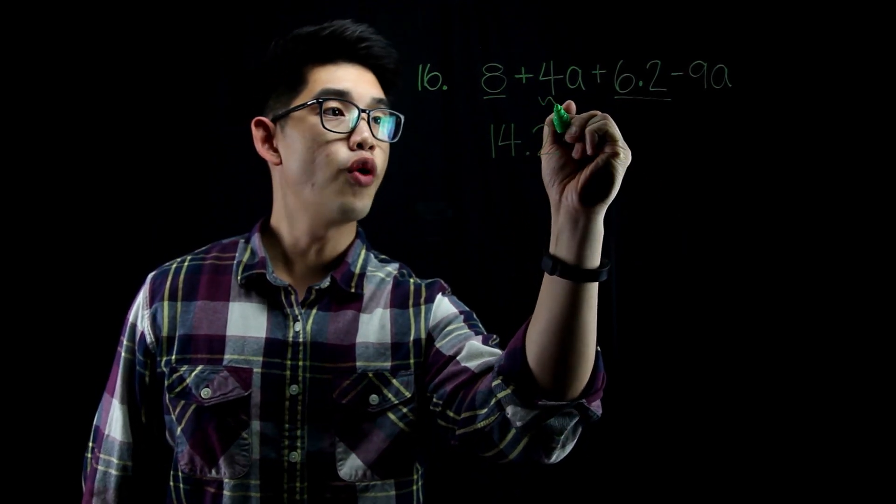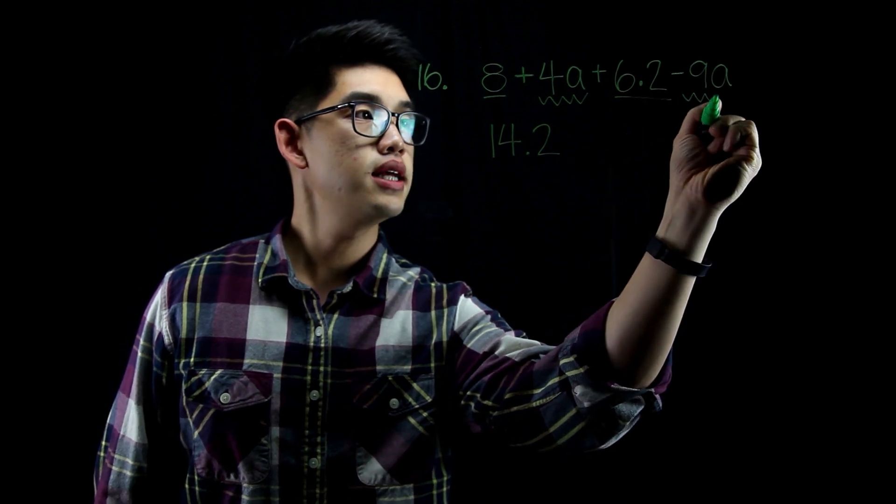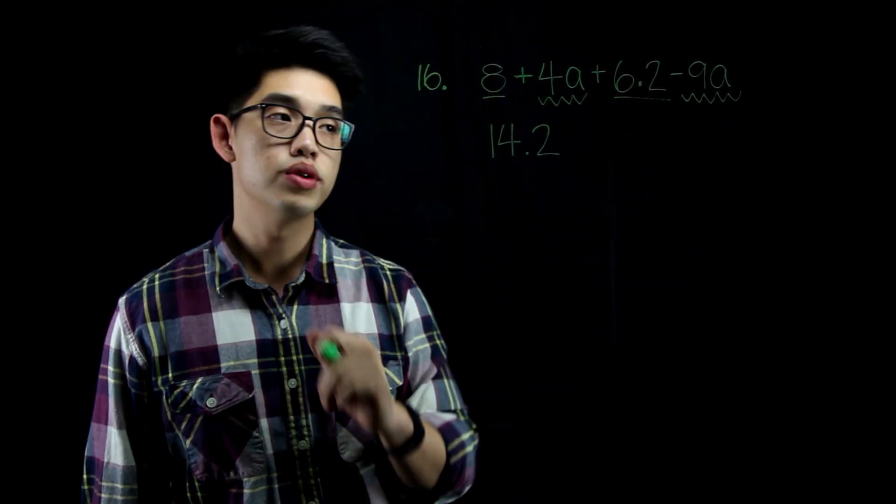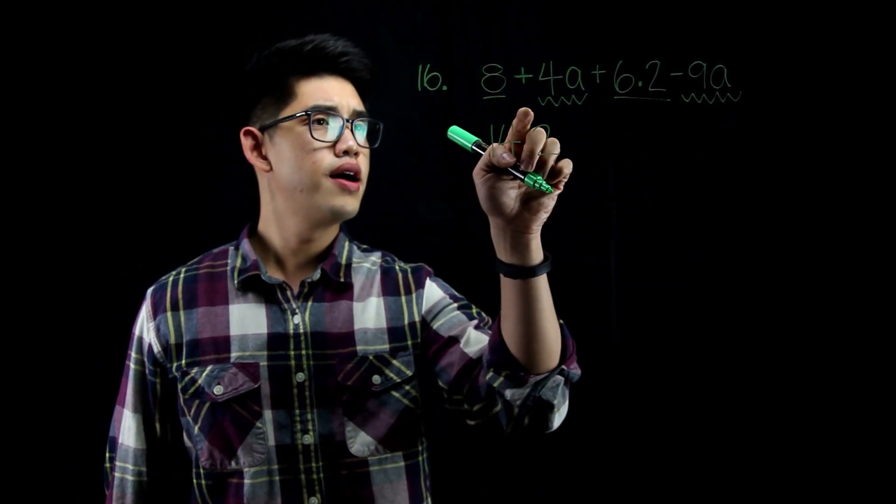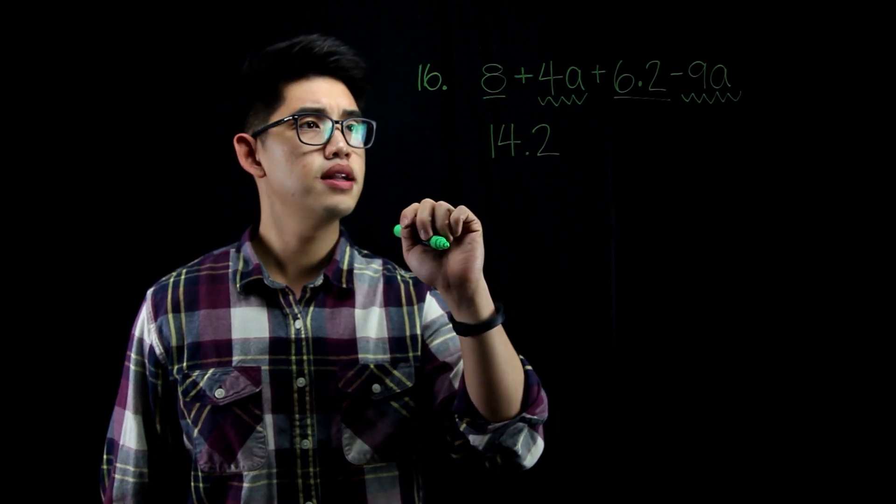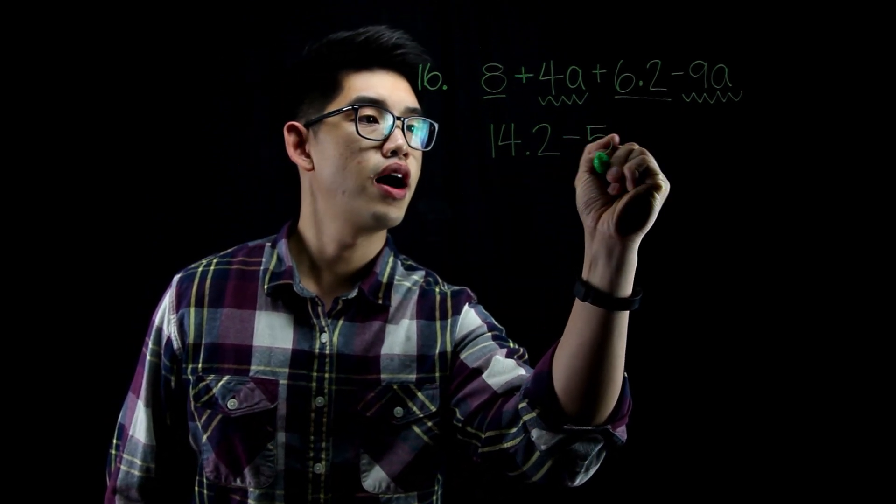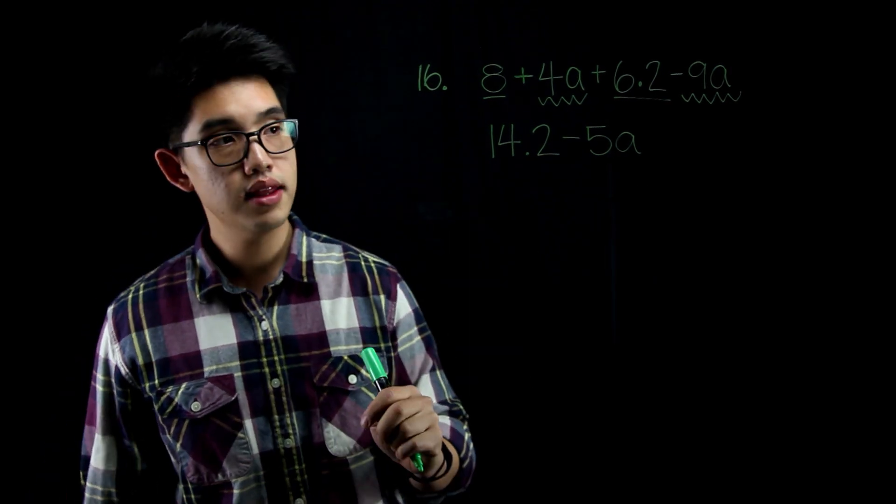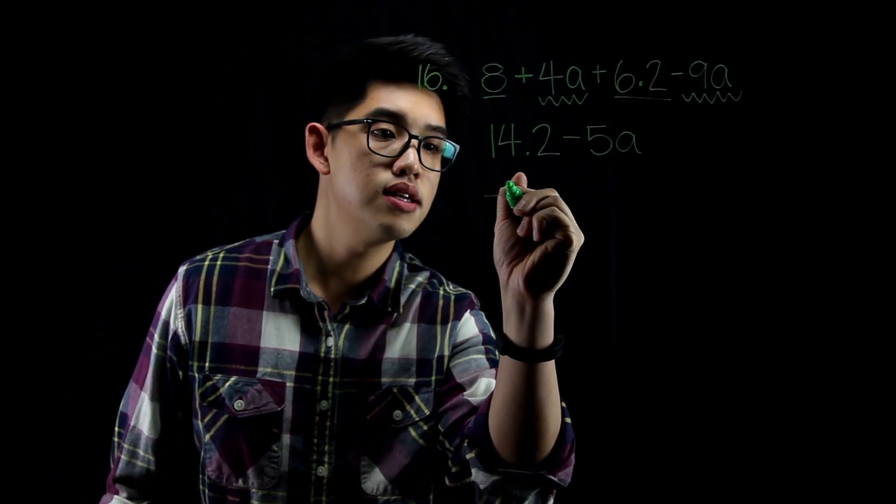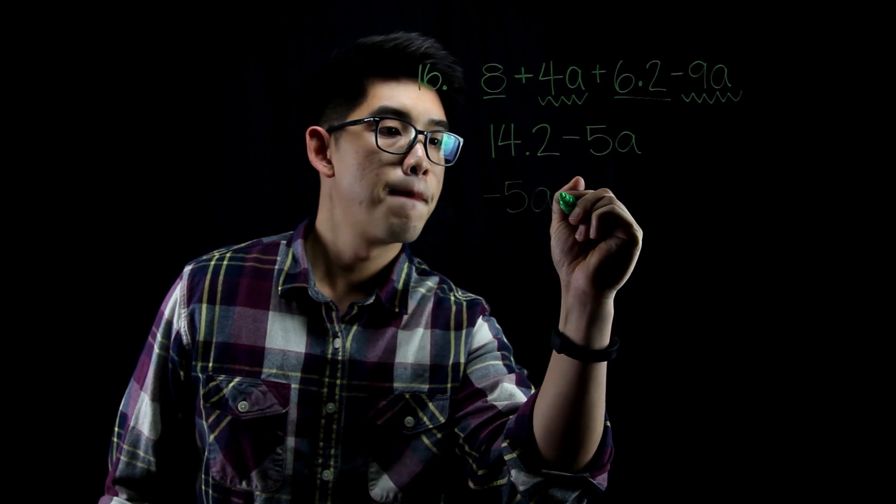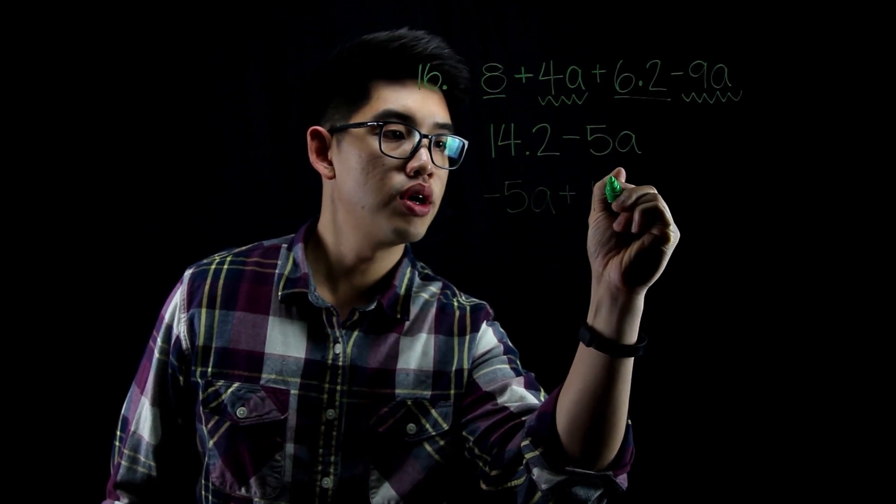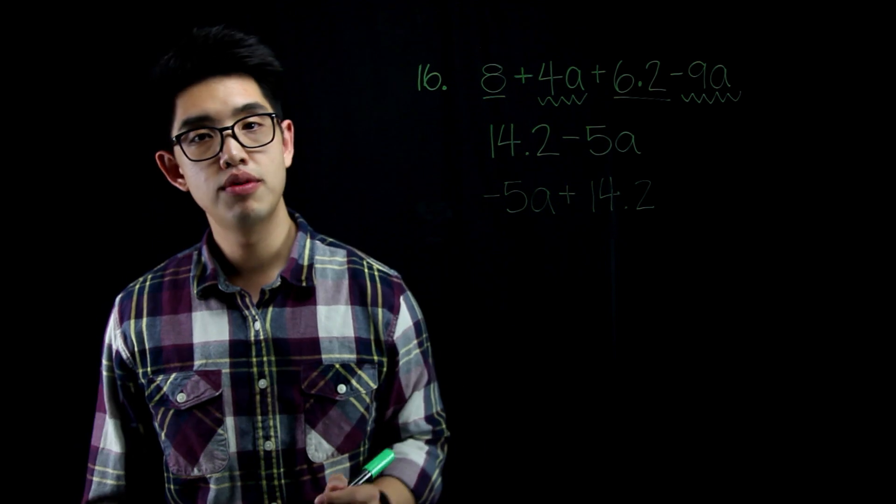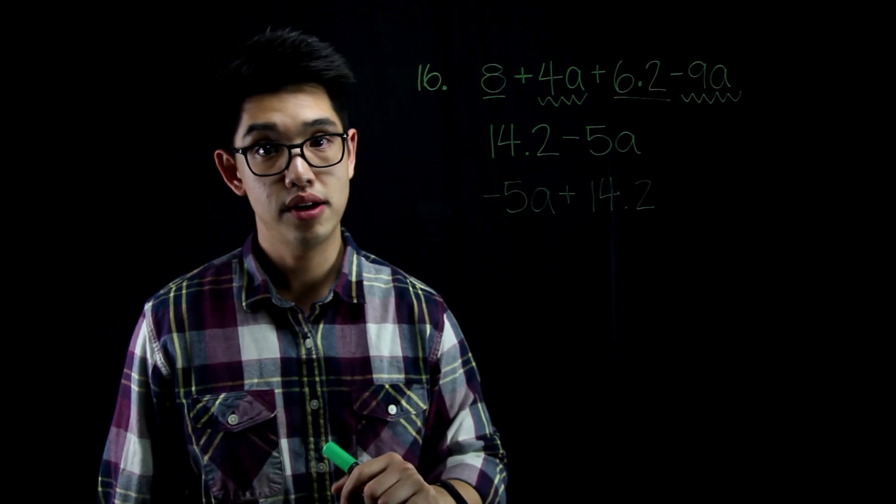And then I have 4a's here and then I have minus 9a's. We know that we're going to get a negative answer. 4a minus 9a, that's going to be minus or negative 5a. And guess what? That's your answer. If you didn't write it like that, if you wrote it as negative 5a plus 14.2, that's okay too because of the commutative property. So both of these are the answers.